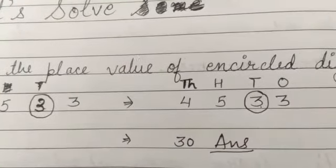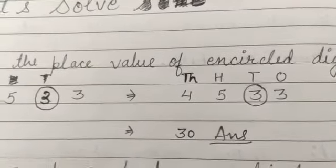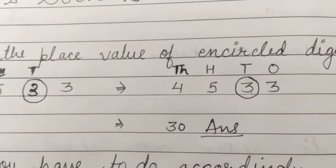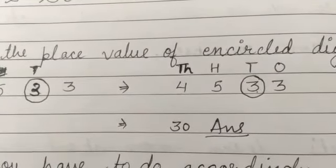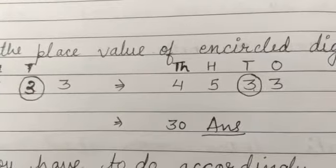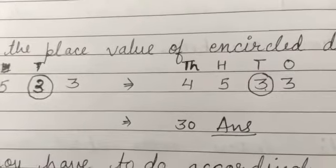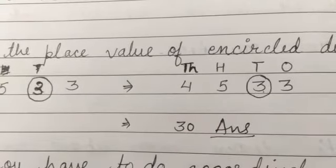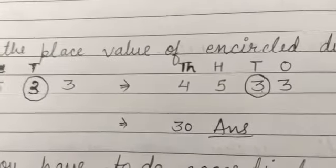Now, the circled digit could also be on 5, which is under hundreds — then we write five hundred. If it is on the digit at thousands, we write four thousand. If it is under ones, we just write the single digit with no zeros. The rule is: thousands gets three zeros behind the digit, hundreds gets two zeros, tens gets one zero, and ones is just the plain digit itself.